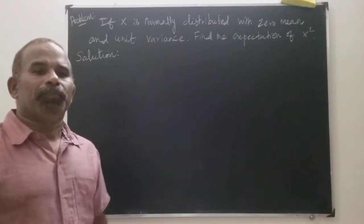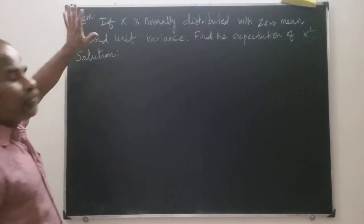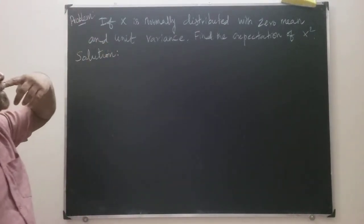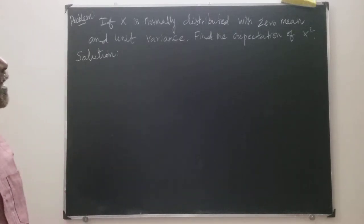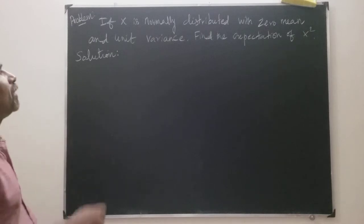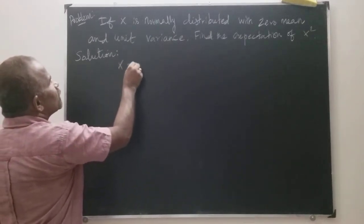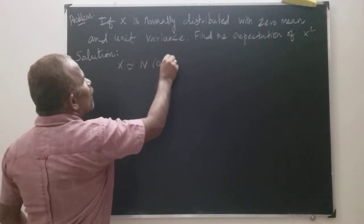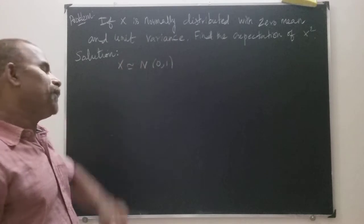Good morning. This is also one of the important problems. Here, if x is normally distributed with mean 0 and unit variance, that means x is normally distributed — N(0, 1). So mean is 0, variance is 1.